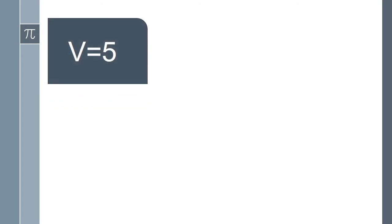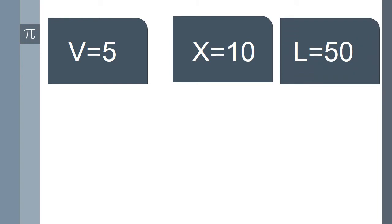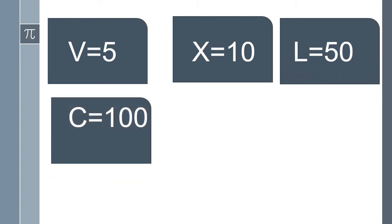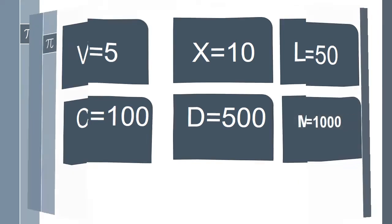There are some big and important Roman numerals. Let's discuss about that. V is equal to 5, X equals 10, L is equal to 50, C is 100, D is 500, and M is equal to 1000.